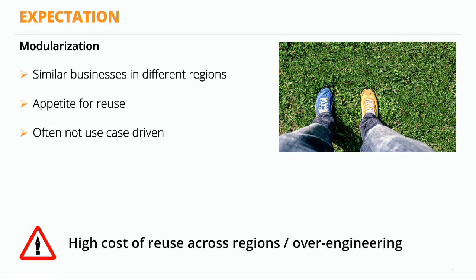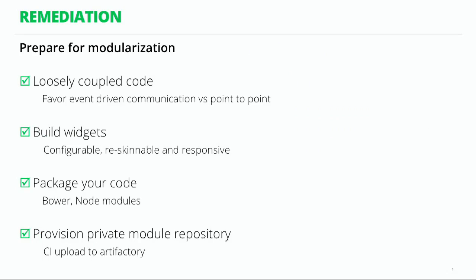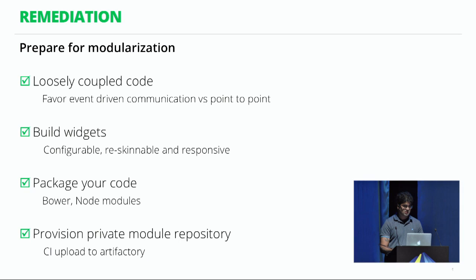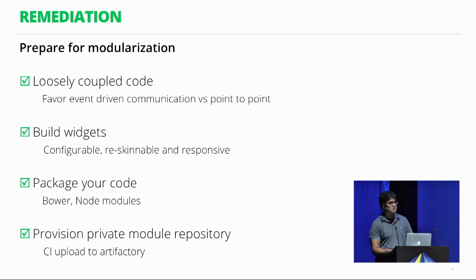If you don't have a proper use case for reuse, you end up over-engineering modularization. To remediate this, prepare for modularization but don't overthink it. Favor building loosely coupled code. Build modules in JavaScript, but make sure these modules communicate with other modules through events rather than point-to-point communication. For example, if you have a login module, let it raise an event once successfully logged in, and people interested in that event can react. That way, the code is much more reusable.